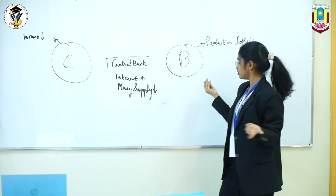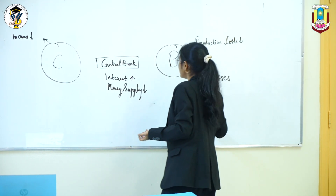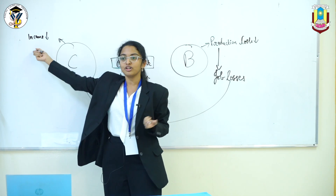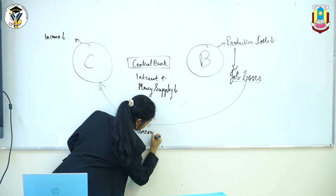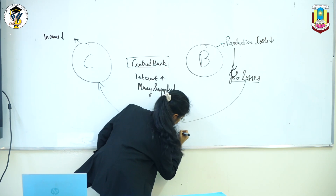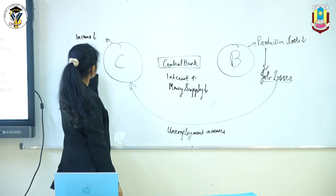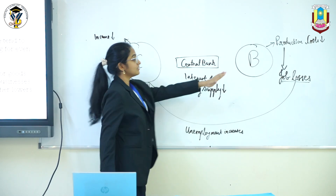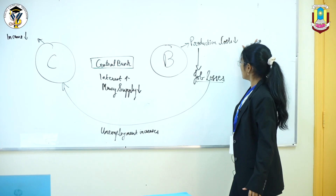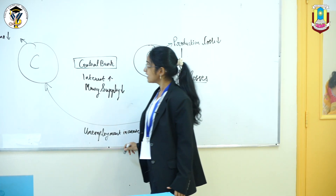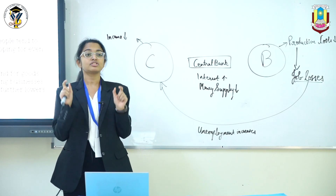Worst case scenario, businesses start laying off people from work, which means people are losing jobs, directly affecting consumers whose income will also decrease. Because people are losing jobs, unemployment is also increasing. The income was already low, and now because people are losing jobs, their income further reduces. Because of that, businesses have fewer customers again, so they cut down on production costs again and lay off more people. Job losses increase, unemployment increases, and this loop goes on. This vicious cycle is known as the deflationary spiral, which is one of the most dangerous effects of deflation.